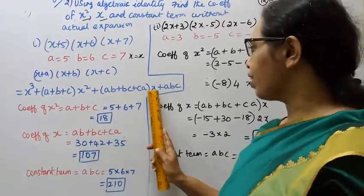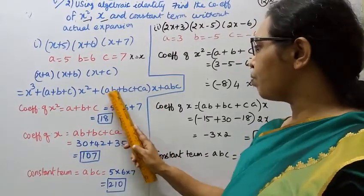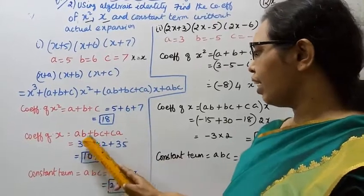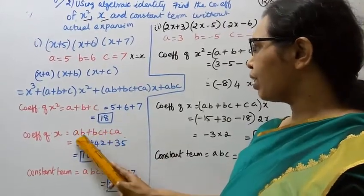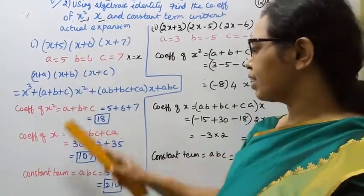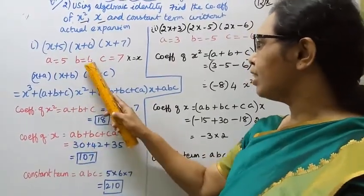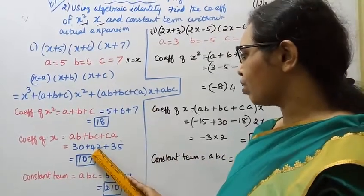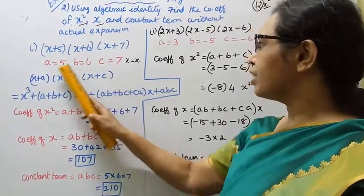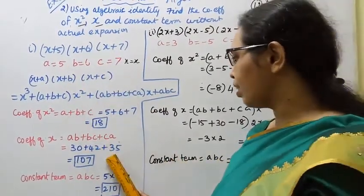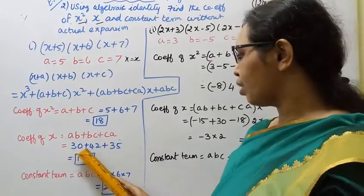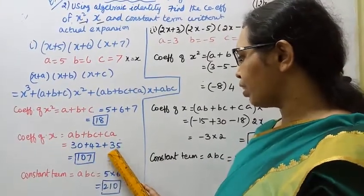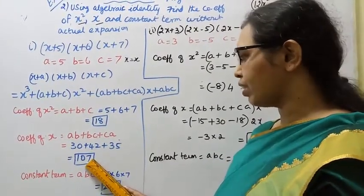Coefficient of x equals ab plus bc plus ca. So ab is 5 times 6 equals 30. bc is 6 times 7 equals 42. ca is 7 times 5 equals 35. Then 30 plus 42 is 72, and 72 plus 35 is 107. Coefficient of x is 107.